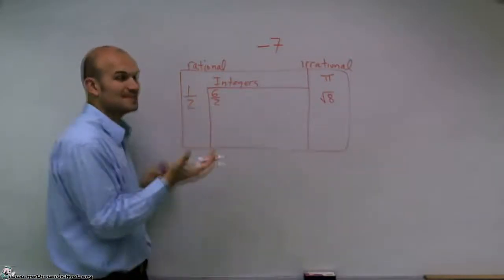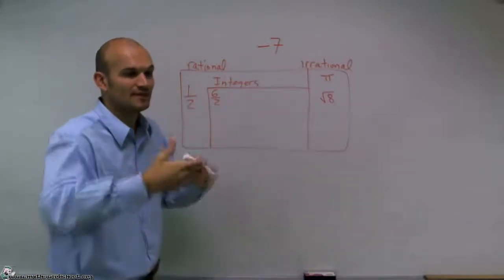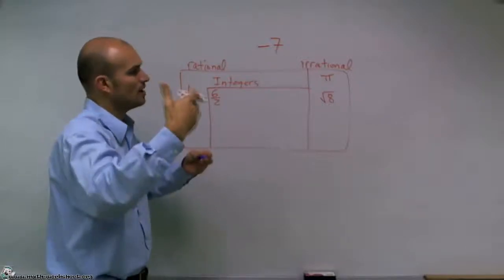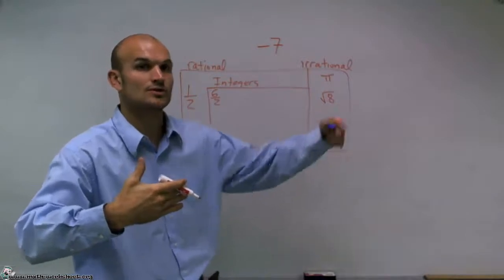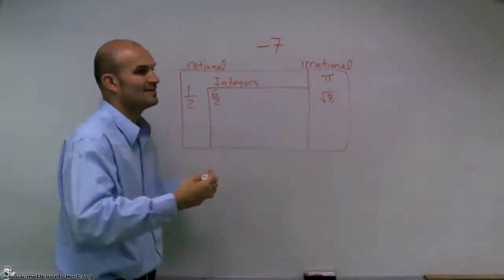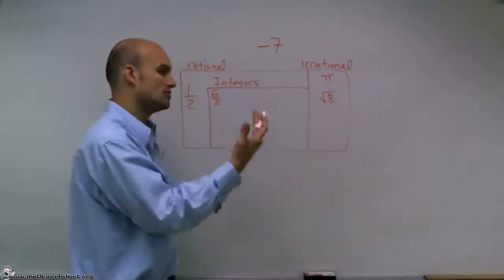When I do 1 divided by 2, that gives me a decimal 0.5. And if you think of a number line, you're looking at whole numbers, like stepping stones, like 1, 2, and 3. So 0.5 isn't going to be one of those whole numbers that we're looking for.